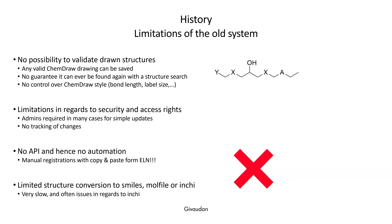The system also had limitations in terms of privileges — they weren't very fine-grained, meaning administrators often had to perform simple tasks. There was no tracking of changes and the system was monolithic with no endpoints for integration. This essentially meant a lot of copy-pasting during registration from the ELN, which was a very big pain point. The database also tended to be slow for reading chemical structures and there could be issues with format conversions.